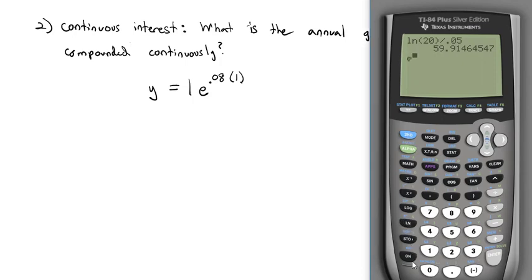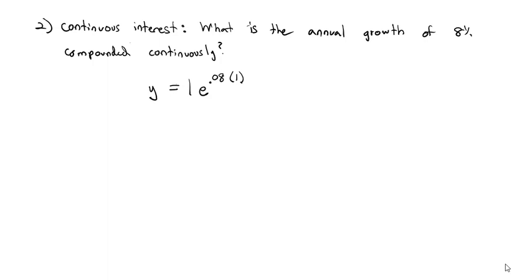We have e to the 0.08 times 1. When I hit Enter, I end up with 1.0833. After 1 year, I have 108.33% of my initial investment. Well, 100% is what I invested, so the growth is 8.33%. This investment gets 8% compounded continuously, which turns into an annual growth of 8.33%.